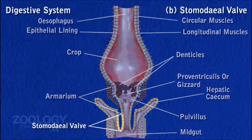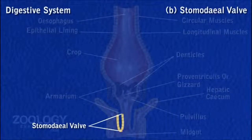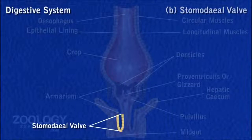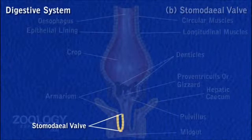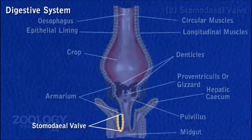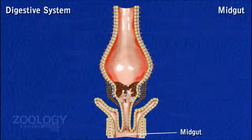Stomodial Valve: Behind the pits, the posterior end of the gizzard extends into the lumen of the midgut as a spout-like narrow tube. The stomodial valve folds back on itself and is thus double-walled. It prevents regurgitation of food from the midgut into the gizzard.